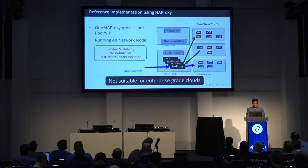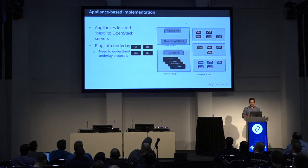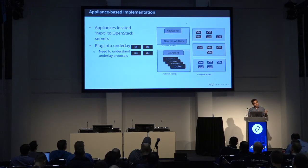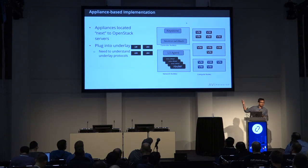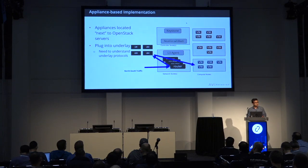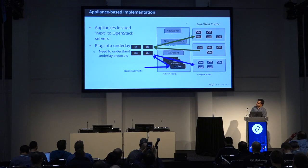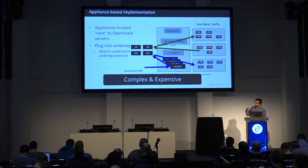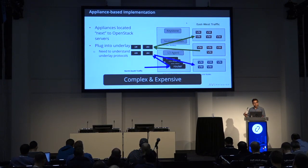It was not really enterprise-grade. The second kind of implementation is appliance-based, using box-based load balancers in data centers placed alongside OpenStack installations. You need to plug them into the underlay — if you have a VXLAN overlay, these load balancers need to understand the VXLAN protocol. North-south traffic hits your network nodes and goes back to these appliances outside and returns, and east-west traffic comes out of the OpenStack racks to these boxes and comes back. Overall it's pretty complex and expensive because to really do tenant isolation you need multiple instances plugged into the underlay.